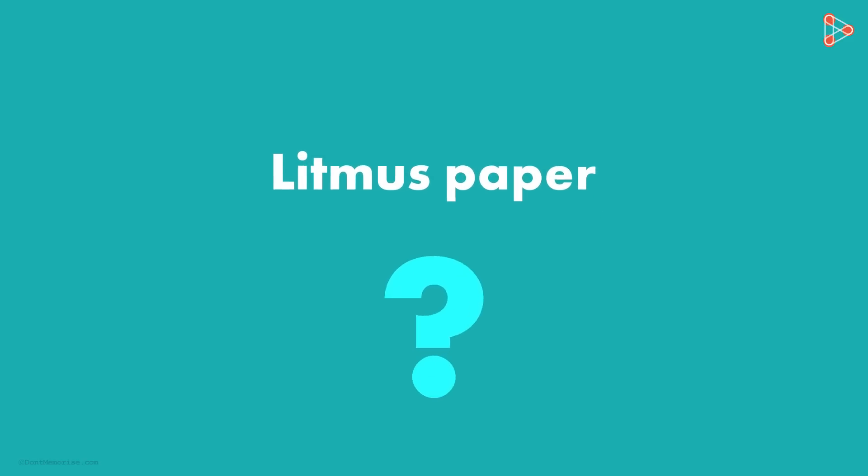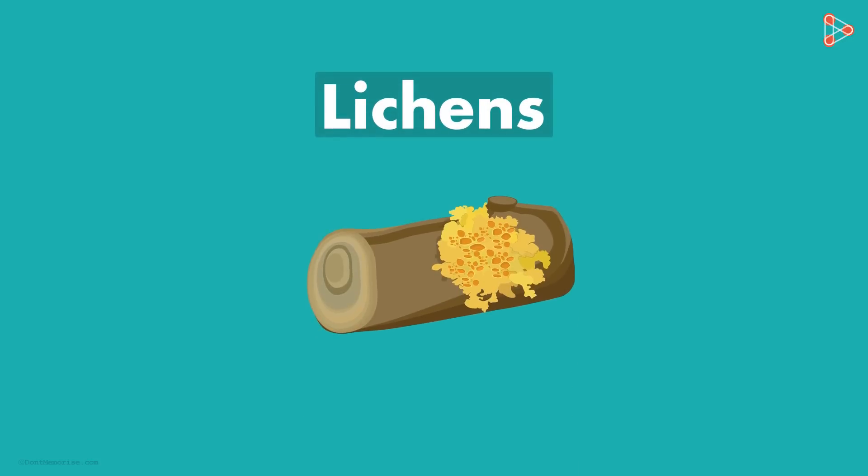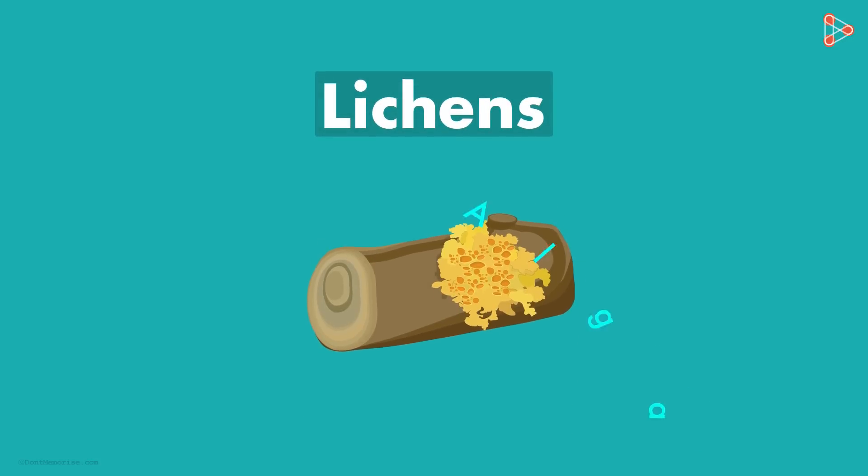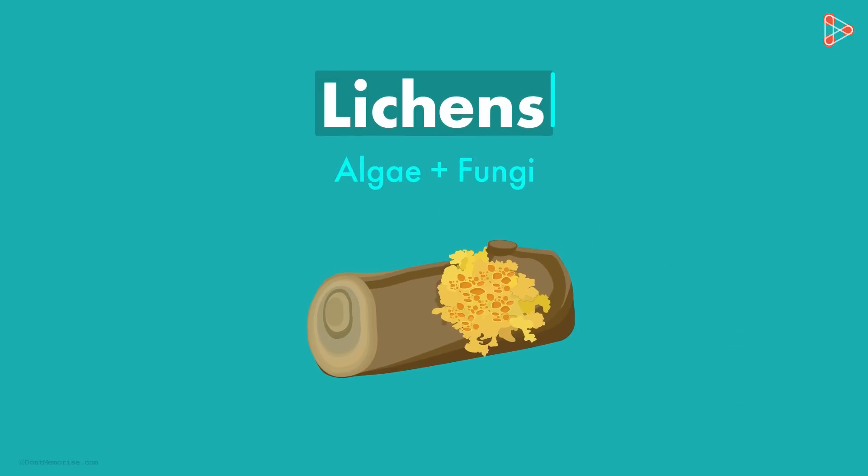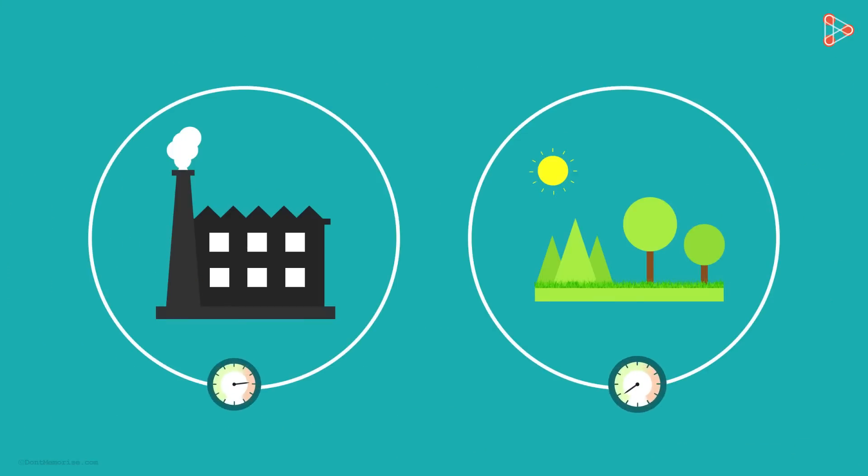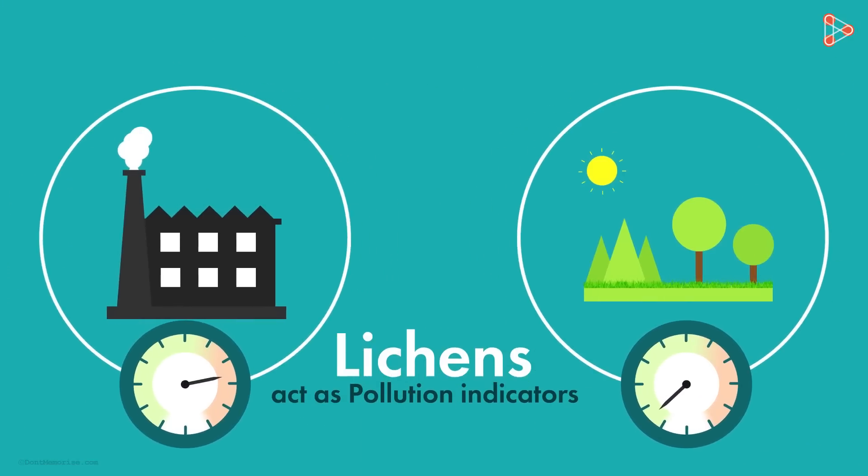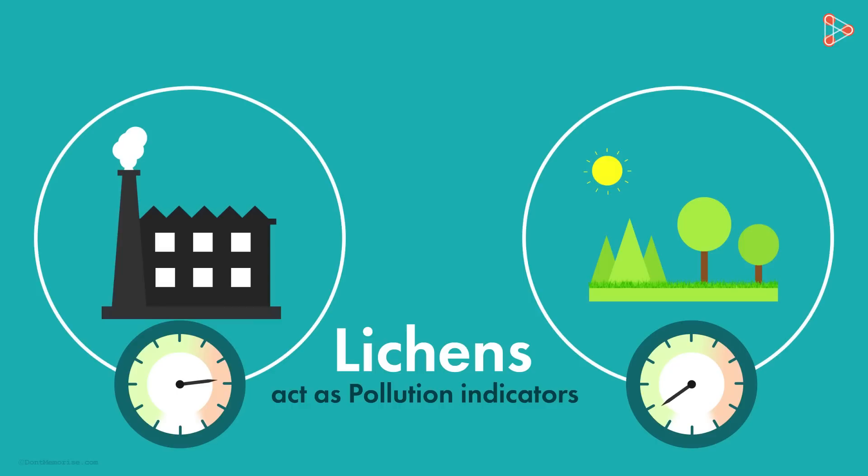What are litmus papers? Well, before that, tell me, have we come across the term lichens? Yes, we have studied in biology that the symbiotic relation of algae and fungi gives us a unit called lichens. The major function of lichens in an ecosystem is that they act as a pollution indicator. Their growth is hindered when there is excessive pollution.